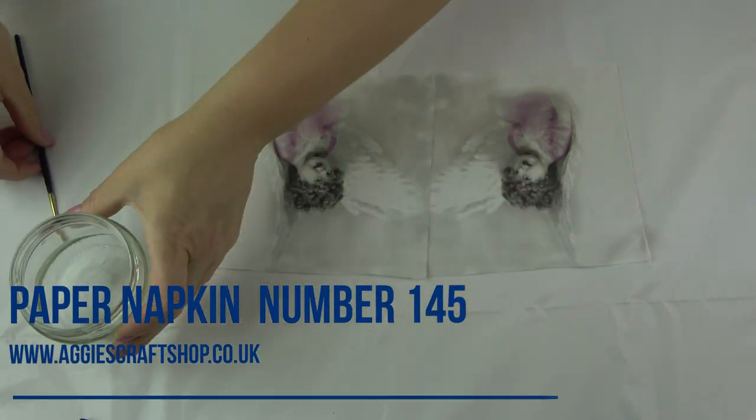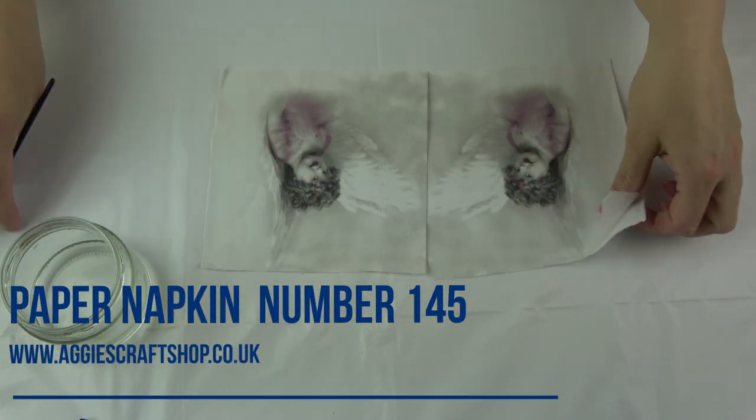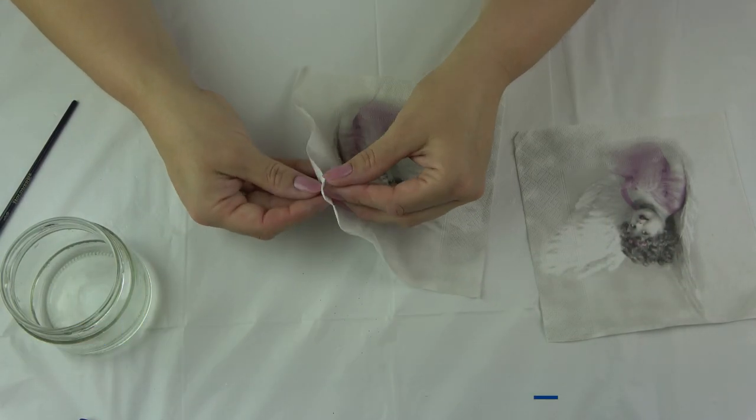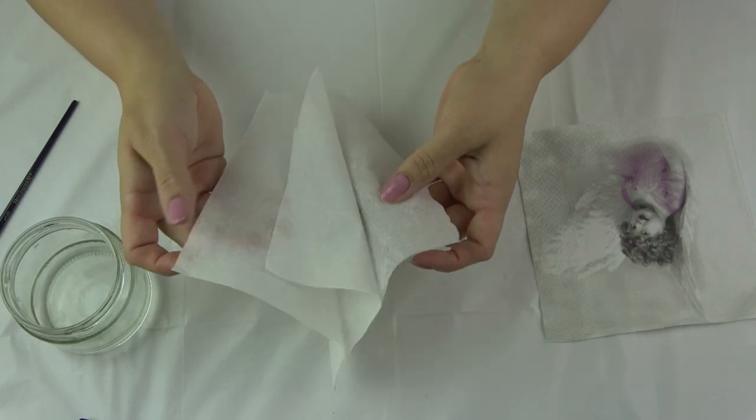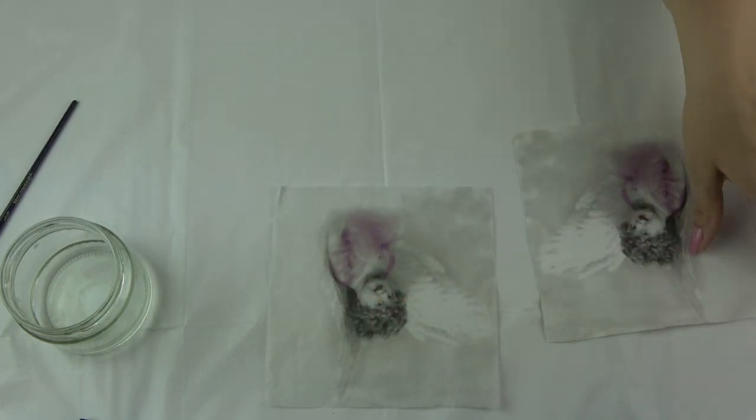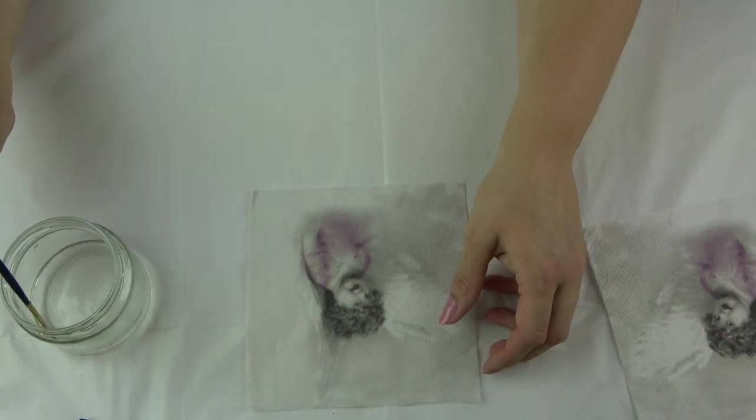Now I can start preparing my napkin. Firstly I remove two bottom layers leaving only top colored layer. With water and small brush I cut image into two smaller pieces.